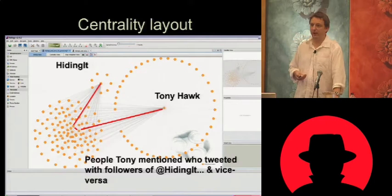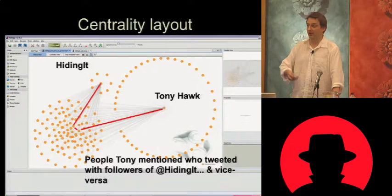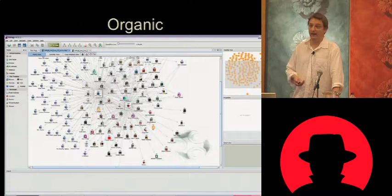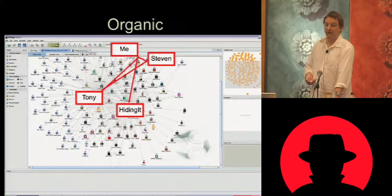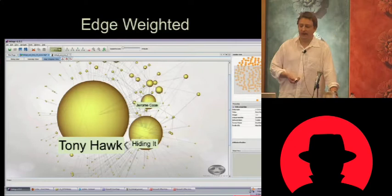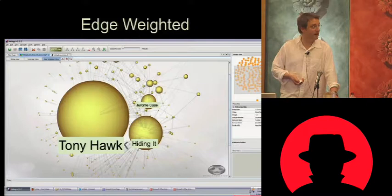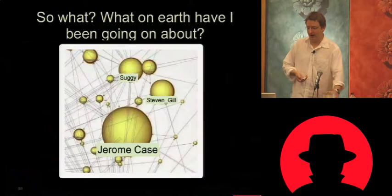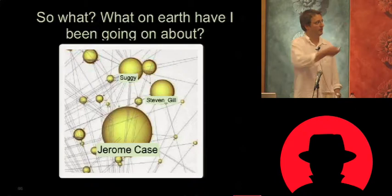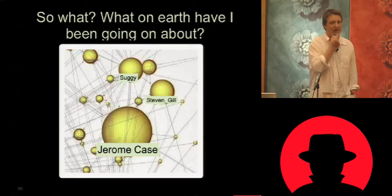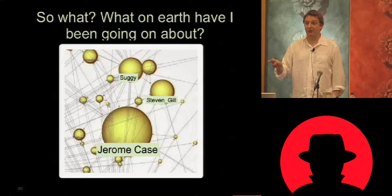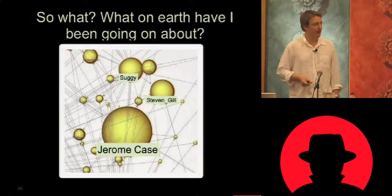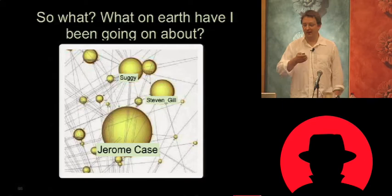You end up with a big graph. I set off a transform on a large data set and went out running — about halfway around a six-mile loop it occurred to me this was all happening on servers in South Africa and they might be getting a little annoyed. I ran back and saw the graph — you can't do a lot with a map that large. You need to prune it, removing entities that don't correspond with anybody else. After pruning you get a pretty nice graph where you can see @hidingit, Tony Hawk, people following @hidingit, people Tony mentioned, and correspondence between them.